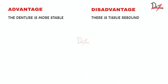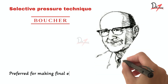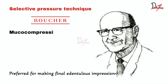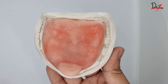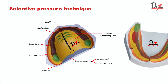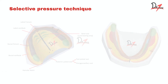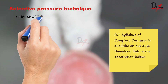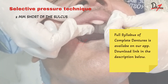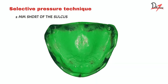There is another technique — the selective pressure technique by Boucher. It is a combination of mucocompressive and mucostatic technique, which is achieved by making a special tray. The relieving structures of the maxilla and the mandible need to be relieved using a spacer. We make a spacer on the primary cast and a custom tray which is 2 mm short of the sulcus. Then we do border moulding or peripheral tracing and the final wash impression is made.